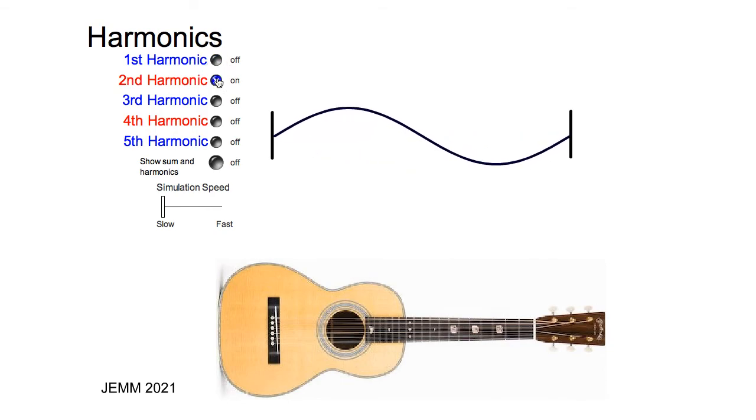The second harmonic looks like this. Again, notice that there seems to be three points that aren't moving. This point here, this point in the middle, and this point here. These are called nodes.